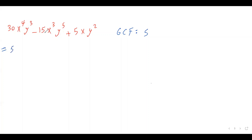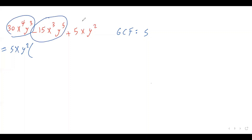Then move on to the variables. For x: the terms have x to the power of 4, x cubed, and x. We always choose the variable with the lowest exponent, so I choose x. Then for y: the terms have y cubed, y to the power of 5, and y squared. I choose y squared. So our common factor is 5xy squared. Open the bracket and divide each term by this common factor.